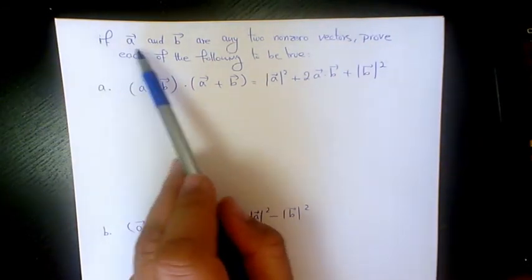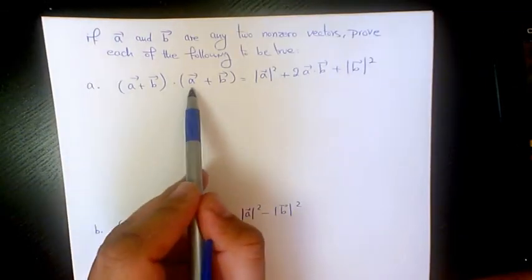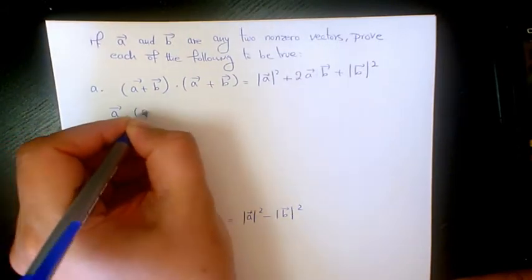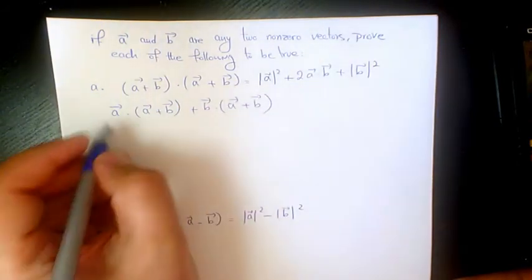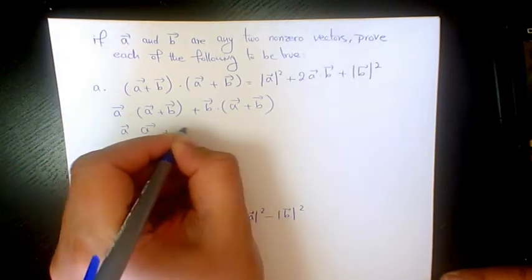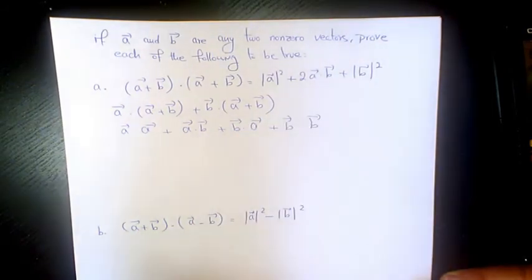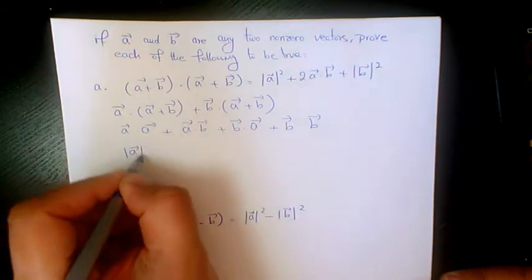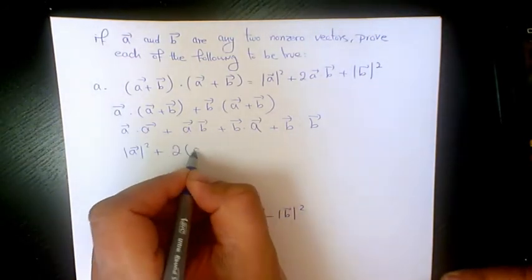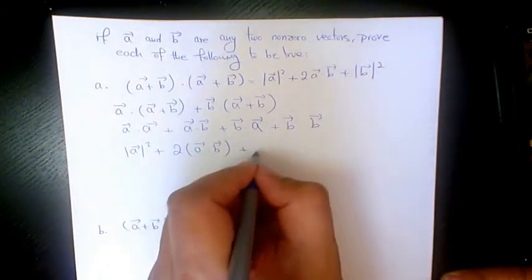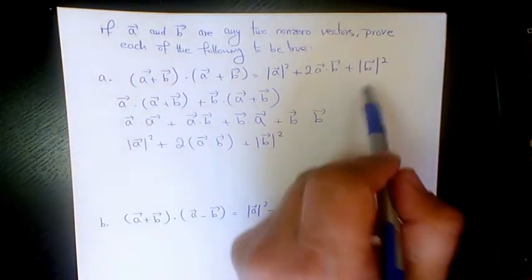Now it says: if a and b are any two non-zero vectors, prove each of the following to be true. For (a plus b) dot (a plus b): distributing gives a dot a plus a dot b plus b dot a plus b dot b. Since a dot b equals b dot a, this becomes |a|² plus 2(a dot b) plus |b|², which proves the identity.